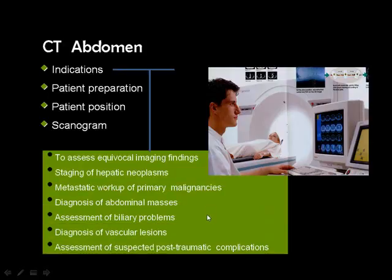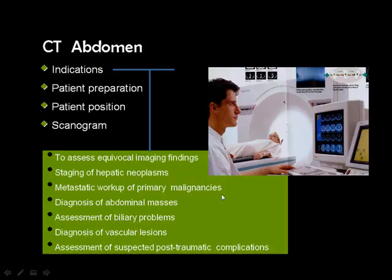There are many indications for examination of the abdomen by CT. The most common and most important is to assess an equivocal imaging finding — many patients are examined by ultrasound and there is a lesion that cannot be fully diagnosed and needs further verification. CT is also used for assessment of liver and biliary problems, diagnosis of abdominal masses, workup of primary malignancies, assessment of vascular lesions, and cases with abdominal trauma.